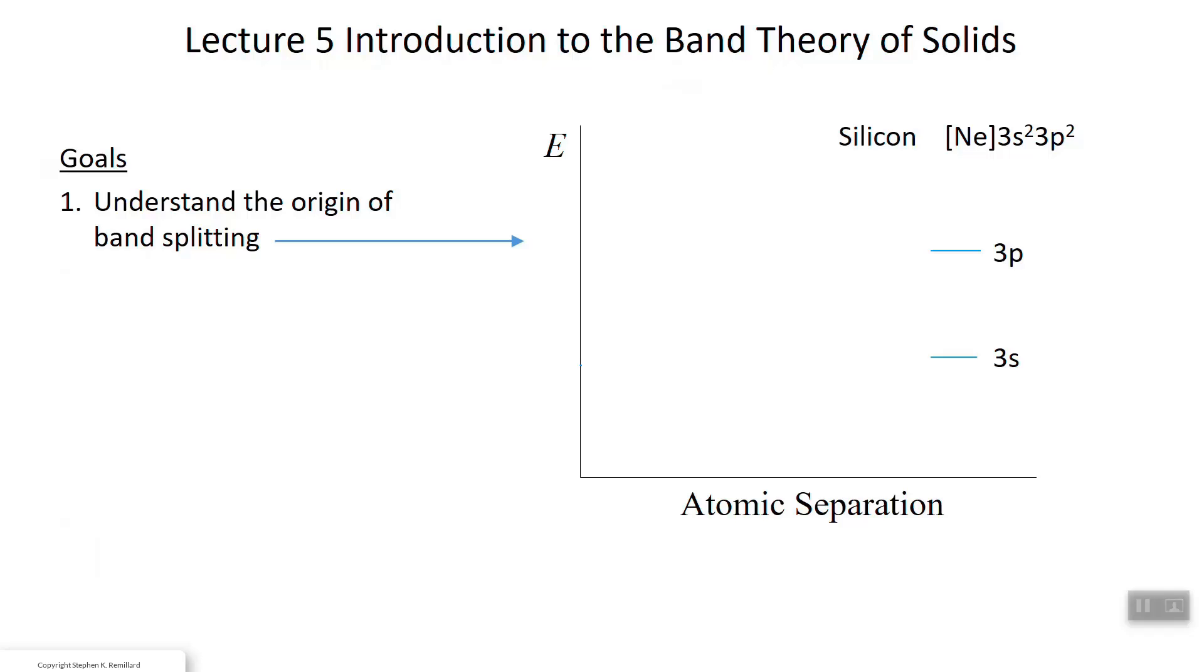To do that I have some goals. The first goal is really to understand the origin of why bands form. We're going to start just talking about silicon. If you look at the electron buildup of silicon, it's neon and two electrons in the 3s subshell and two electrons in the 3p subshell. Those two subshells are not at the same energy, they're split by spin orbit coupling into two different energy levels. That's for a silicon atom, just one silicon atom all by its lonesome.